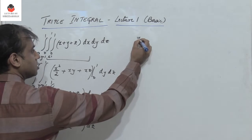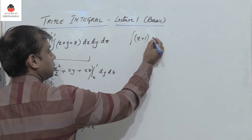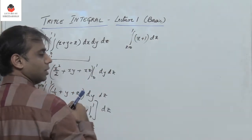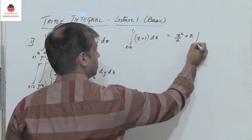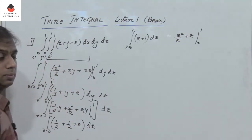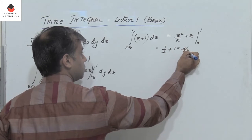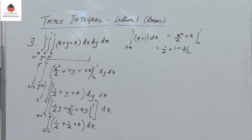(z + 1) has to be integrated with respect to z where z varies from 0 to 1. We get z²/2 + z with z varying from 0 to 1, giving 1/2 + 1 which equals 3/2. This is a very simple problem — in a triple integral you integrate with respect to x, y, and z, treating the other variables as constants each time.